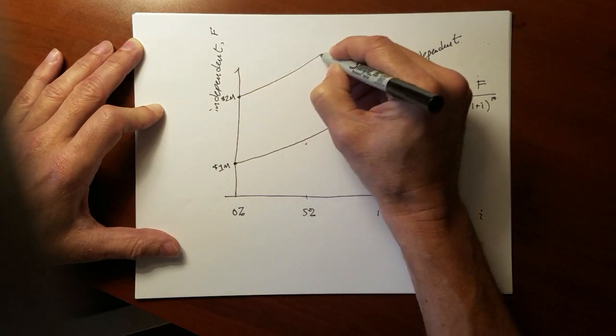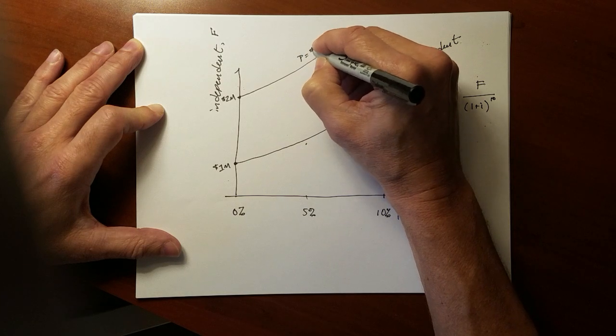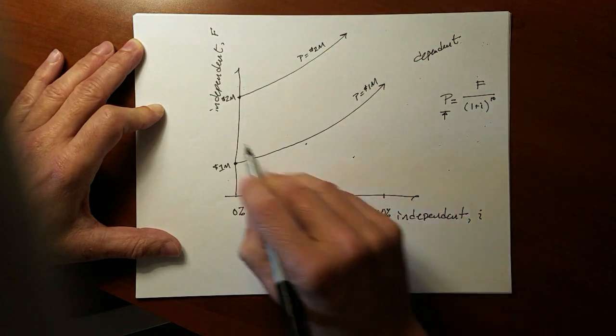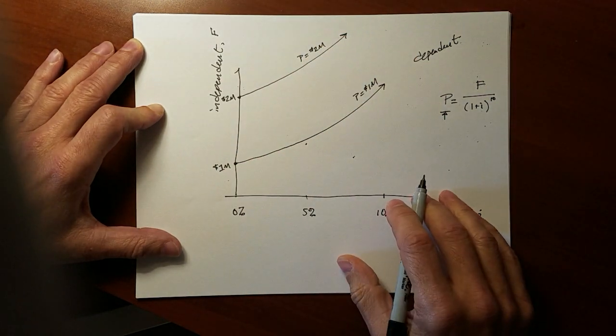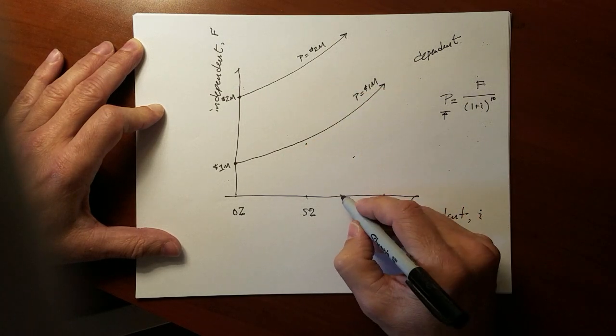And so we could see a relationship. All of the lines of 1 million P will look something like this. All of the combinations of solutions of F and I that would yield 2 million would look something like this.